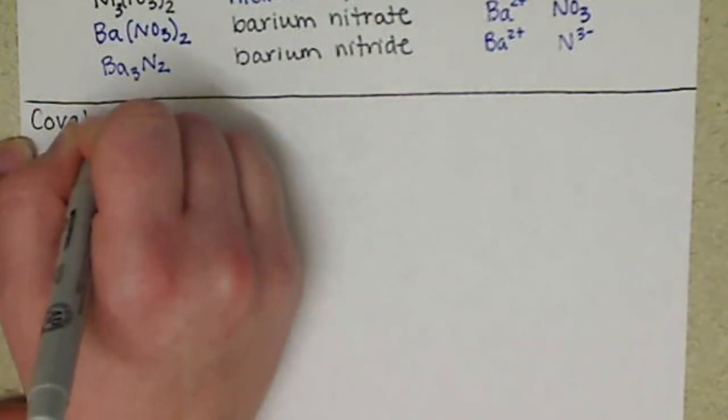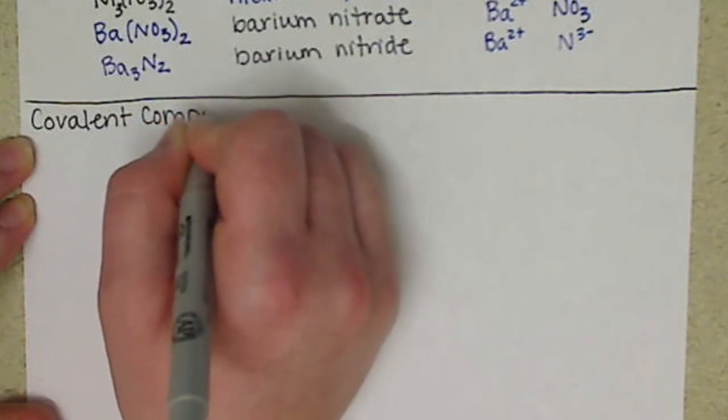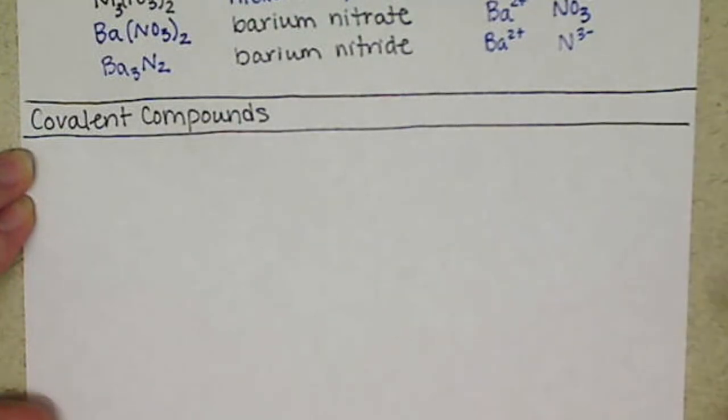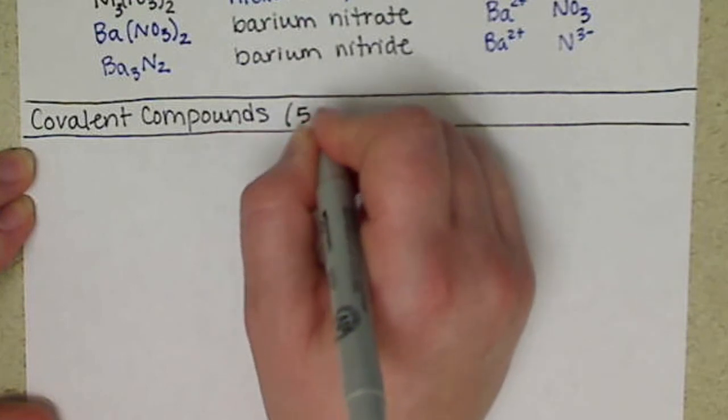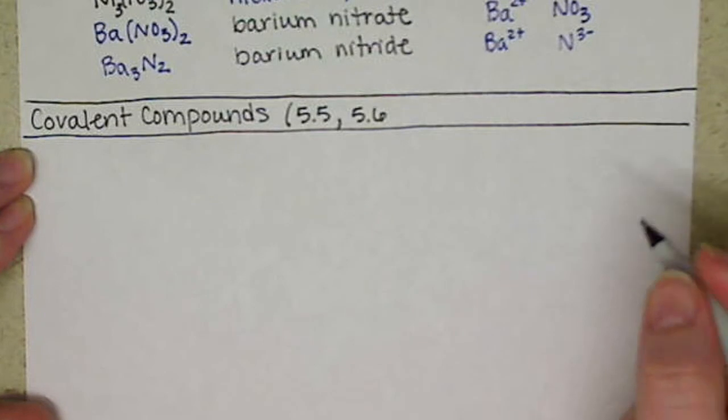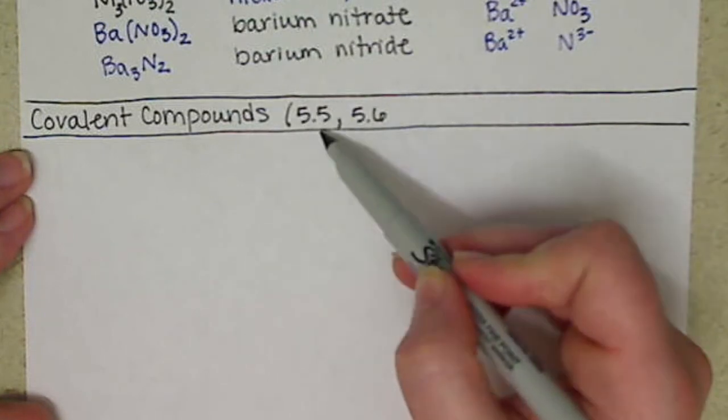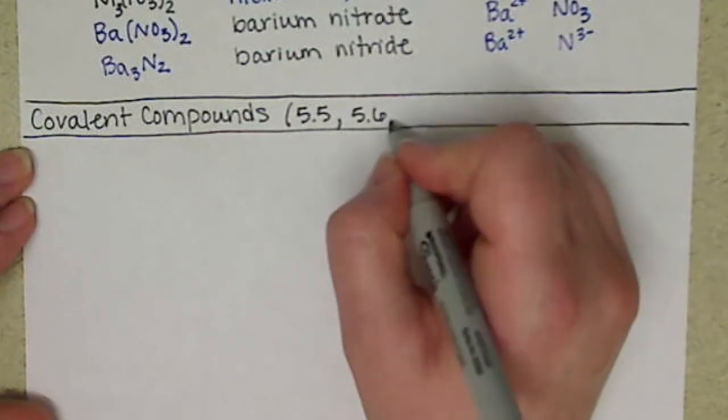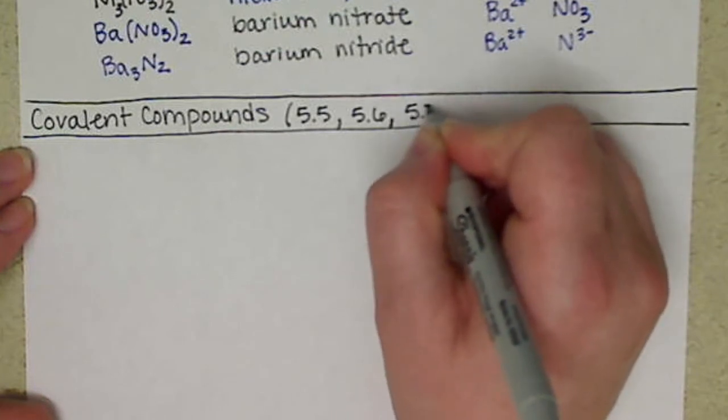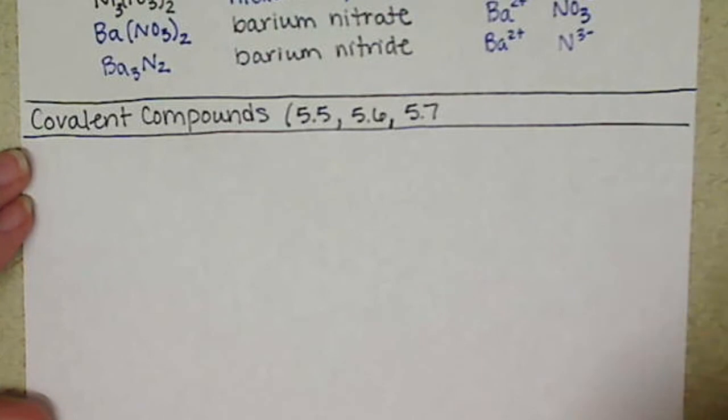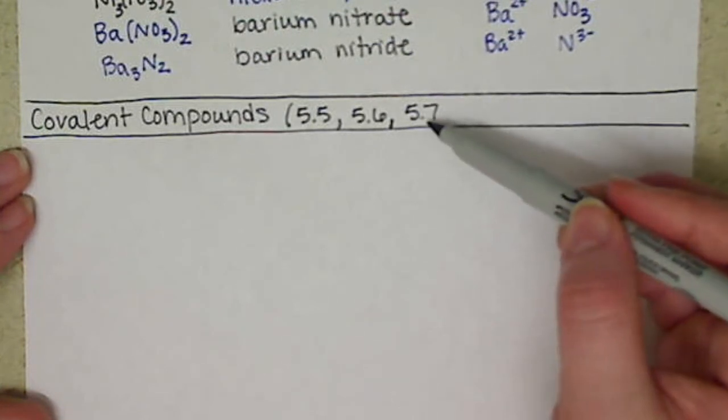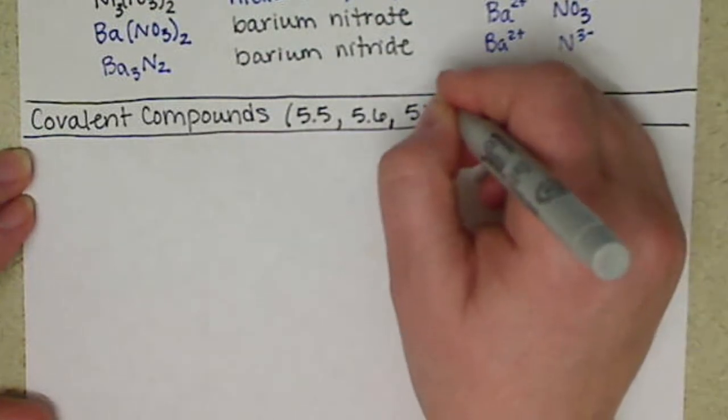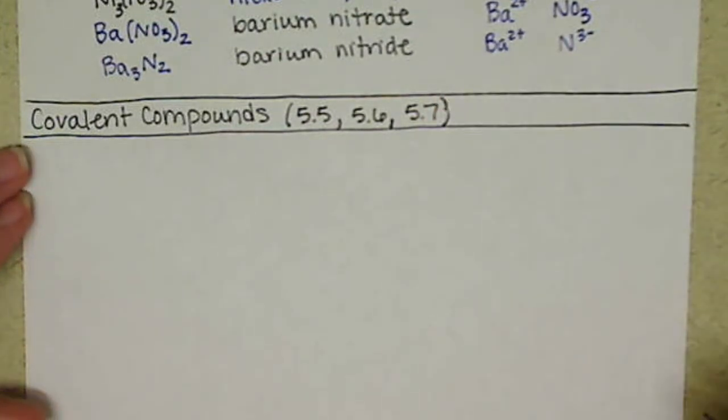So covalent compounds, and I'm combining quite a few sections into this one. This is going to cover sections 5.5, 5.6, and 5.7. 5.5 just introduces covalent compounds. 5.6 talks about naming and writing the covalent formulas, and then we're going to be picking and choosing the information from 5.7. I don't recommend reading 5.7. Basically, this is going to distinguish we have two different types of covalent bonds. So combining those three sections together.